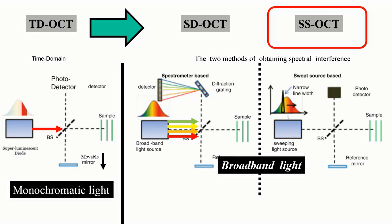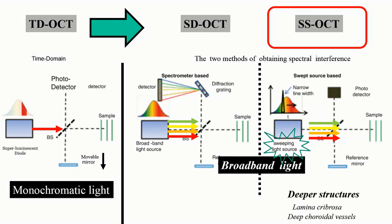Swept source OCT also uses broadband light, but the separation of wavelengths occurs at the level of the source rather than the detector. A narrow linewidth laser is gradually swept through the spectrum to send different wavelengths sequentially. In spectral domain OCT the separation occurs at the detector, whereas in swept source OCT it occurs at the source. Swept source OCT has the advantage of imaging deeper structures, such as the lamina cribrosa and deep choroidal vessels. Spectral domain can image these structures to a limited extent using a technique called enhanced depth imaging by positioning the instrument closer to the eye, but the quality is inferior to swept source OCT.